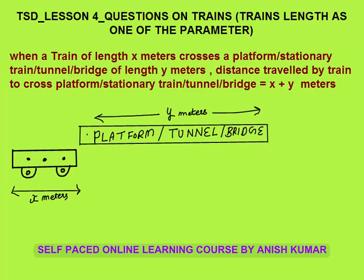Next concept: when a train of length x meters crosses a platform, a stationary train, a tunnel, or a bridge of length y meters — all are similar cases — the distance travelled by the train to cross it will be equal to x + y. That means the distance travelled by the train equals its own length plus the platform length. Let's see how.